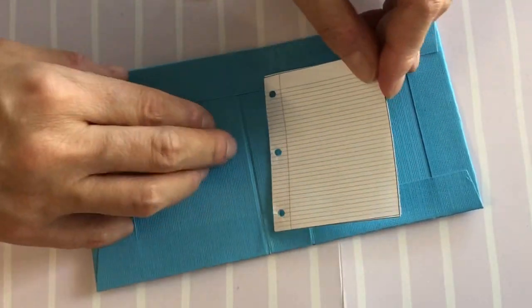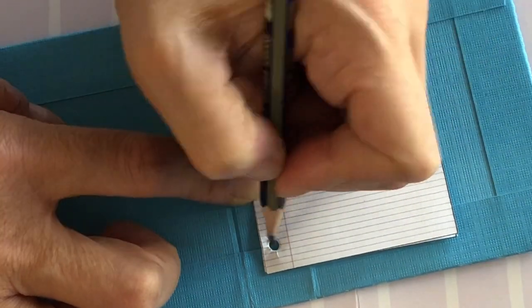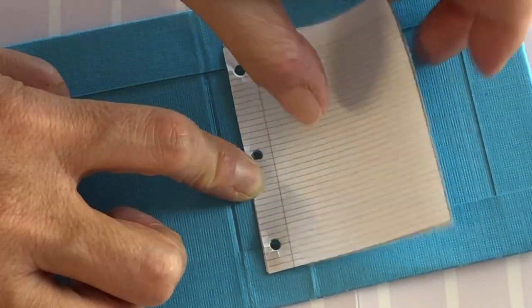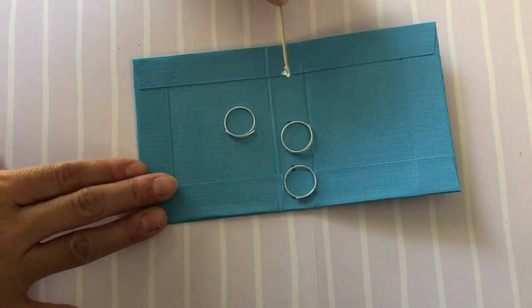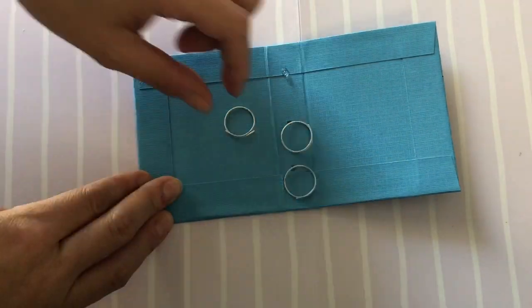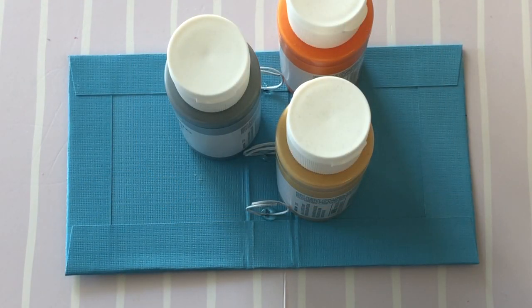To position the rings, take your notepaper and place it in the centre of the spine. With a pencil, mark the three holes. Use drops of E6000 glue or hot glue for a faster method and press the rings into the glue. Hold in place till dry.